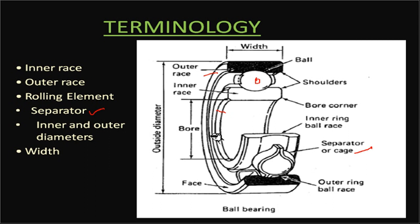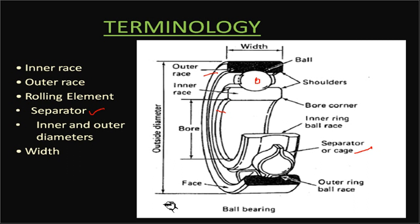The flat surfaces of the rings are called faces. The major important dimensions of a bearing are: the bore diameter — the inner diameter on which the shaft sits; the outer diameter — the dimension that fits into the housing of your machine; and the width. These three dimensions — bore, outer diameter, and width — are what are specified for a bearing.